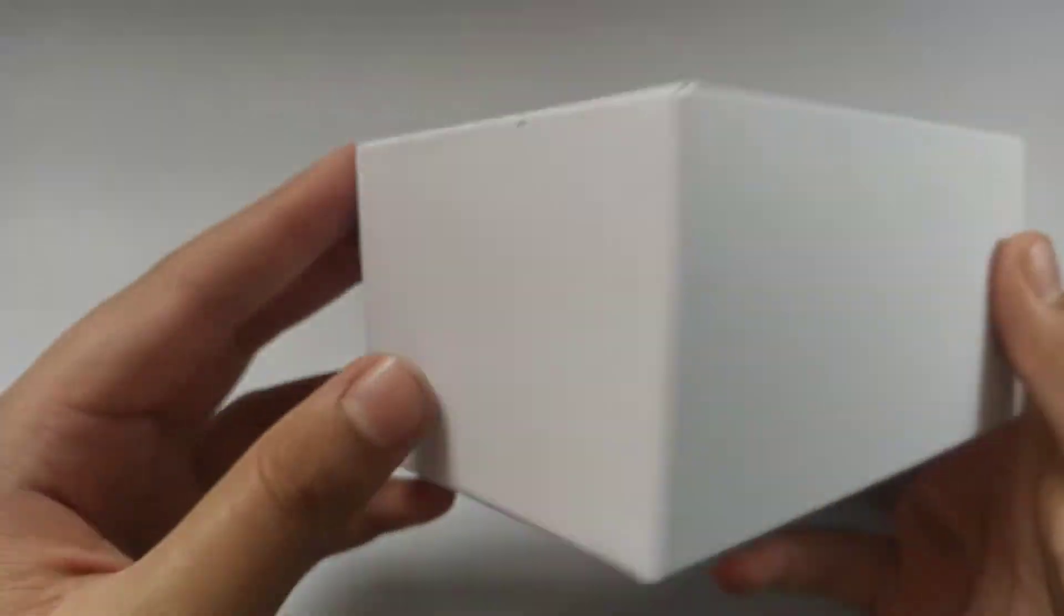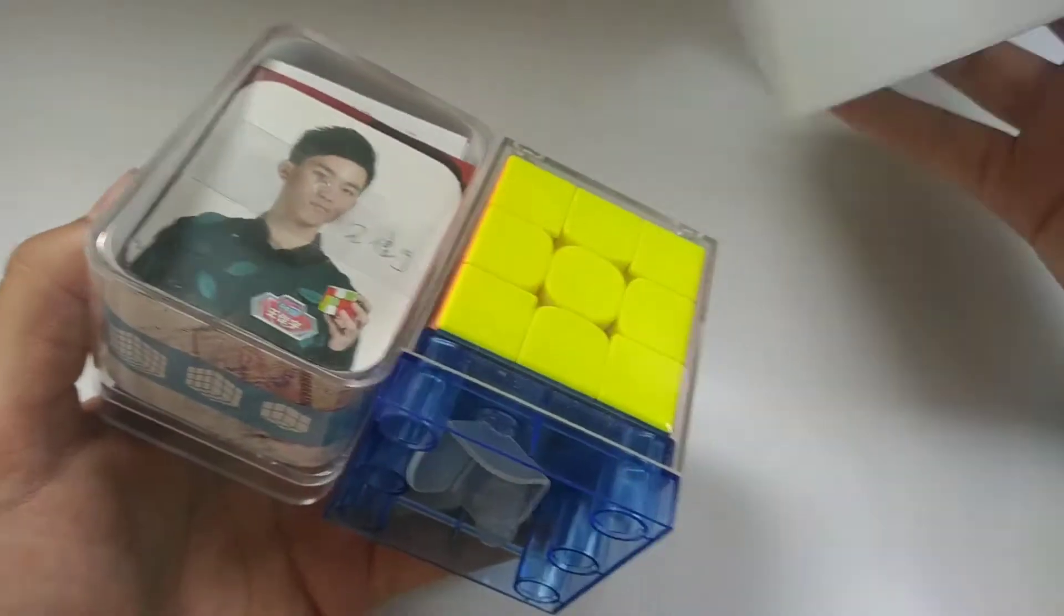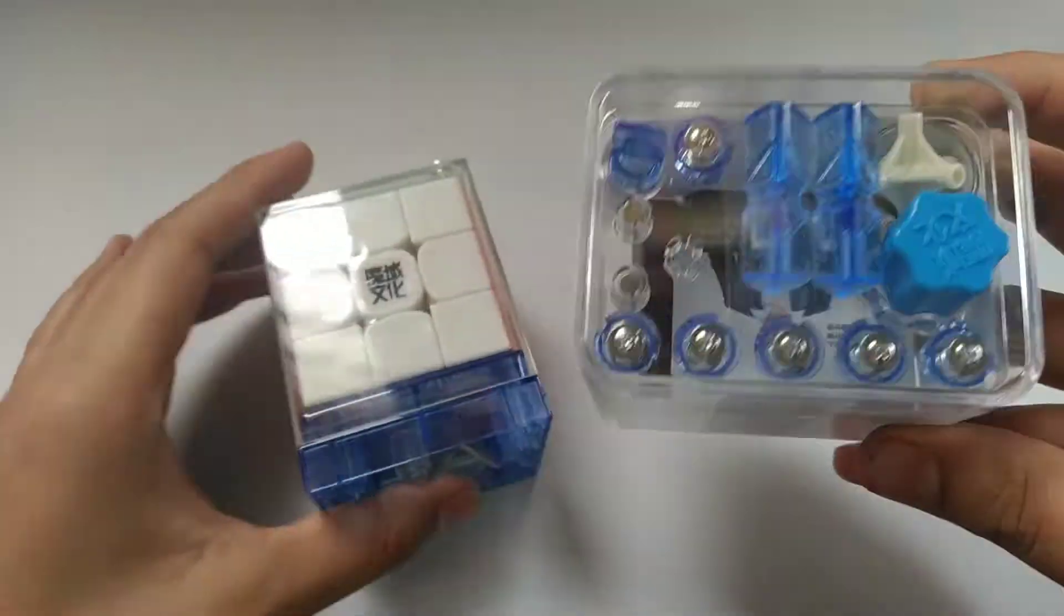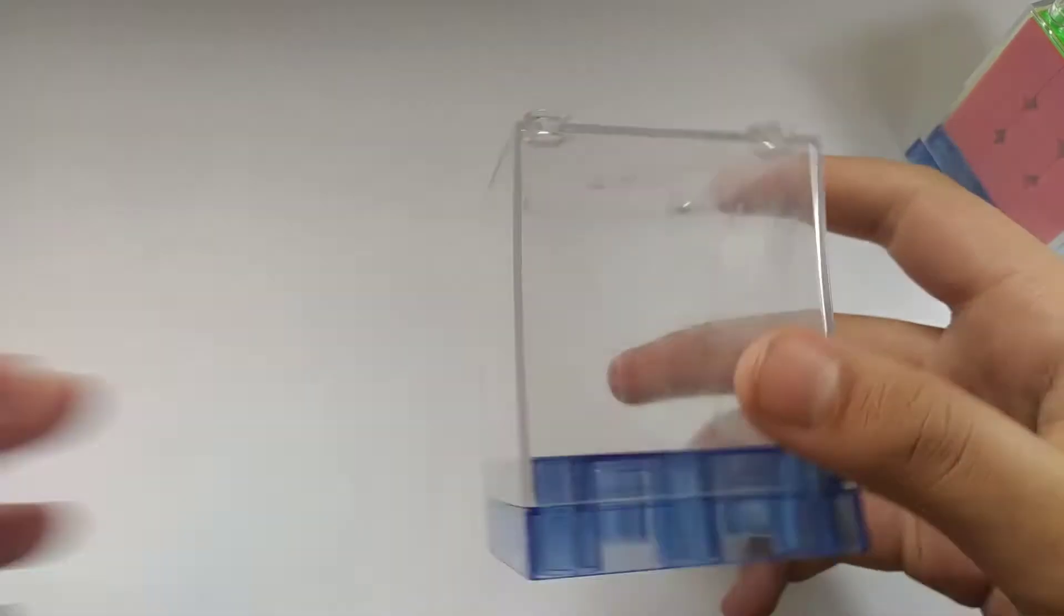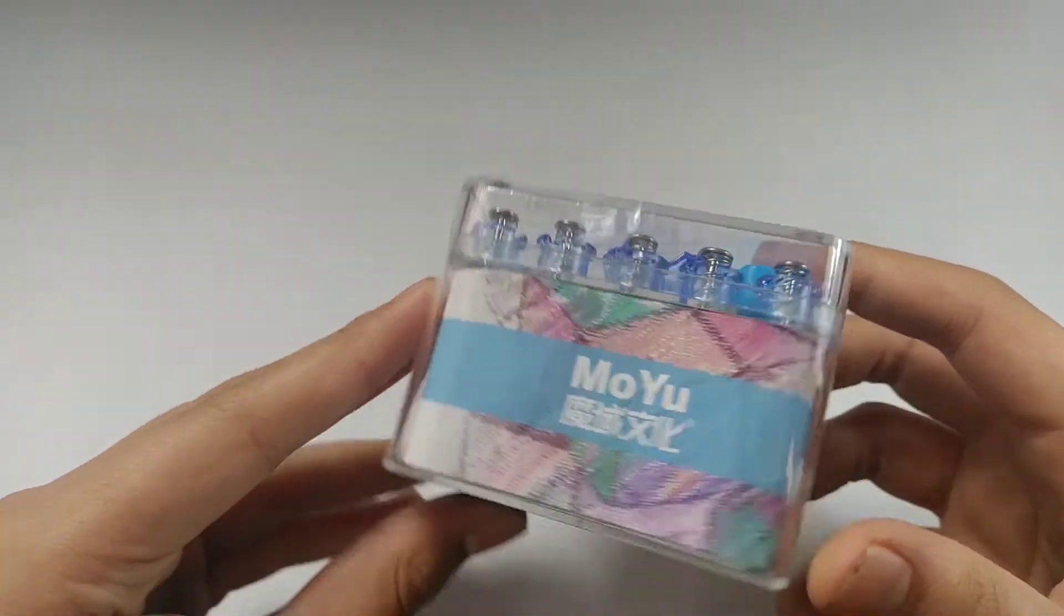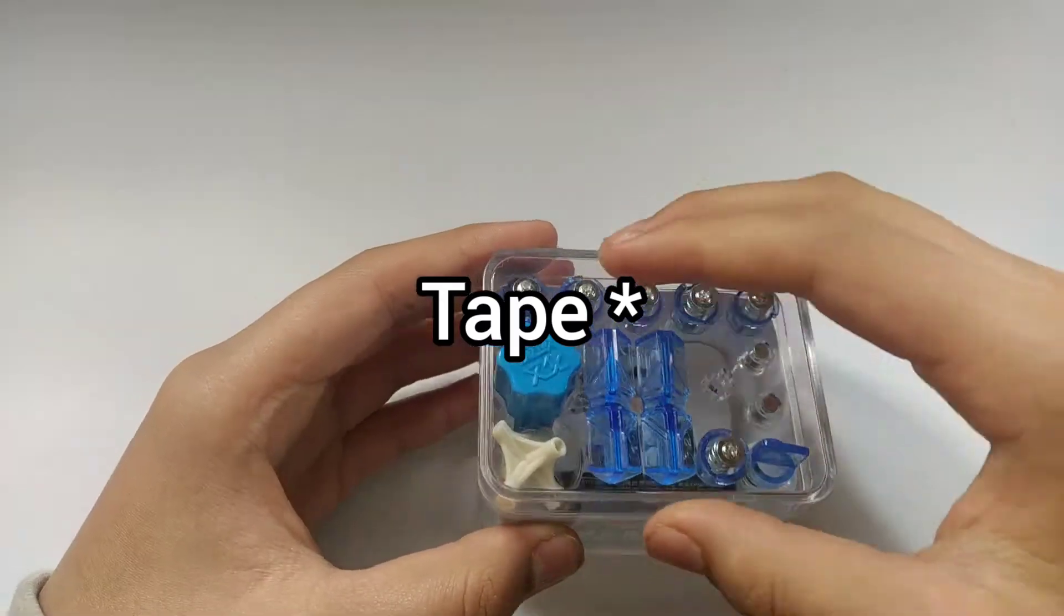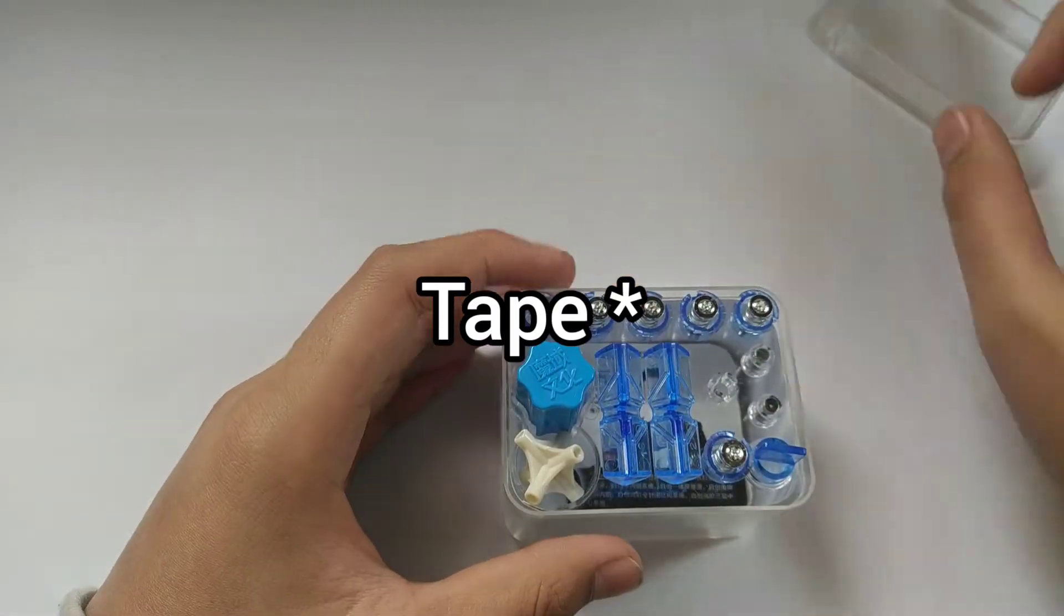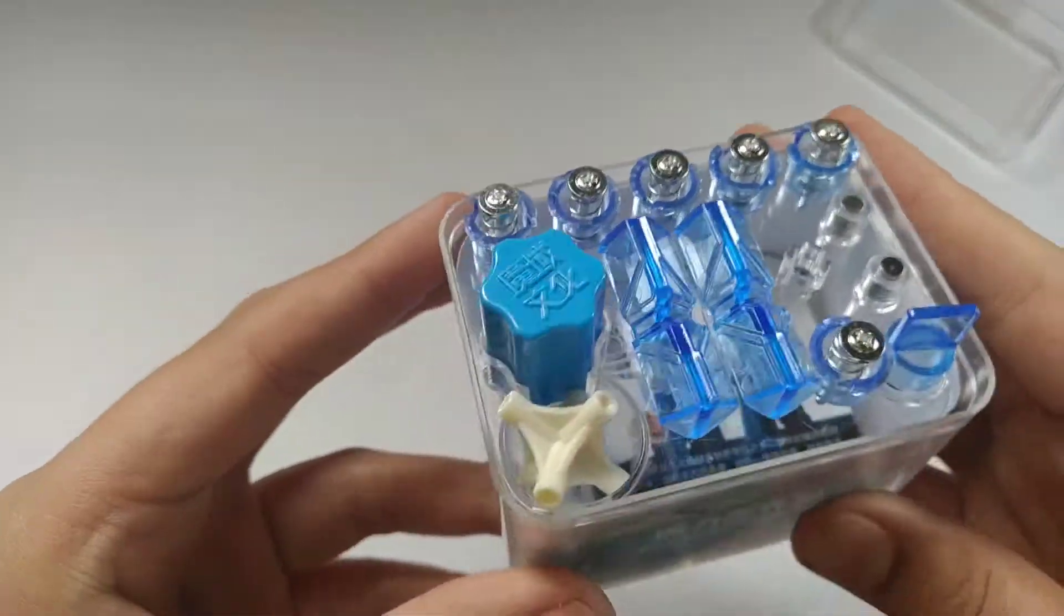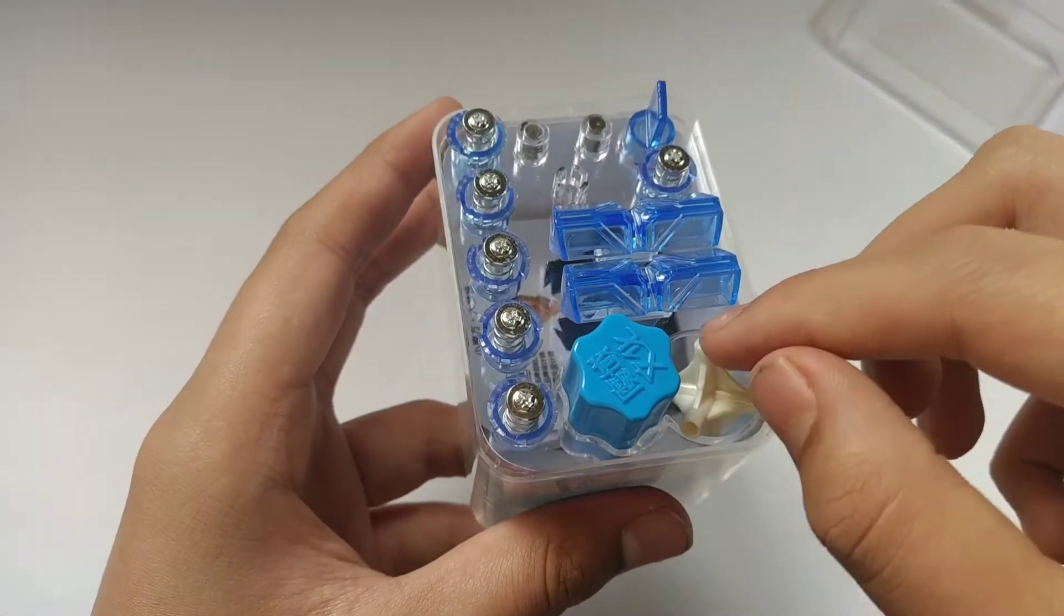The box is pretty nice and you get this accessories package and this case. I also got this case from the Yushao EDM cube. Let's take a look at the accessories box. Inside you get spare core, extra springs, some extra magnets.